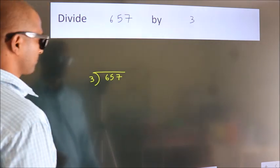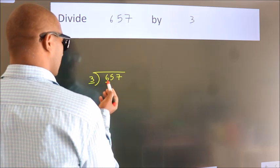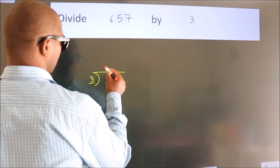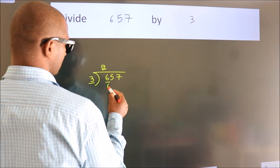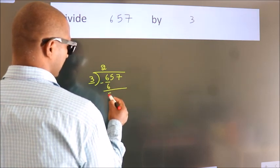Next, here we have 6, here 3. When do we get 6? In the 3 table, 3 times 2 is 6. Now we should subtract, we get 0.